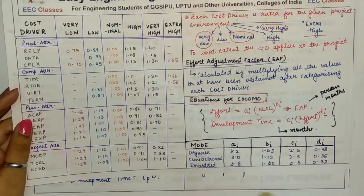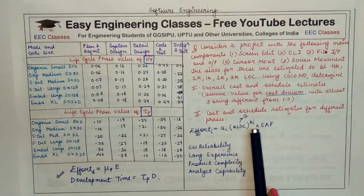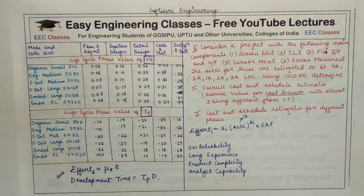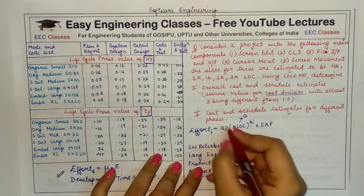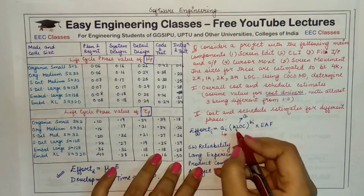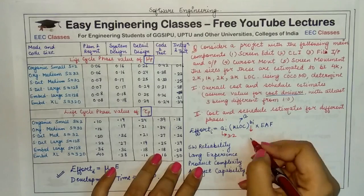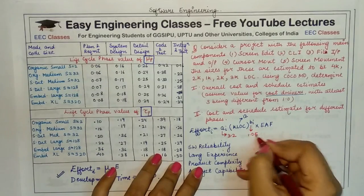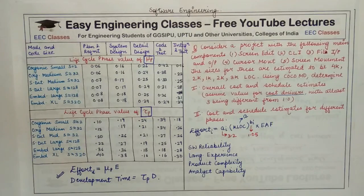Organic mode in the intermediate model uses A = 3.2 and B = 1.05. You need to understand how to choose these values from the table. So A = 3.2, KLOC = 12, and B = 1.05. Next, we calculate the Effort Adjustment Factor using the cost drivers, where at least three values differ from 1.0.